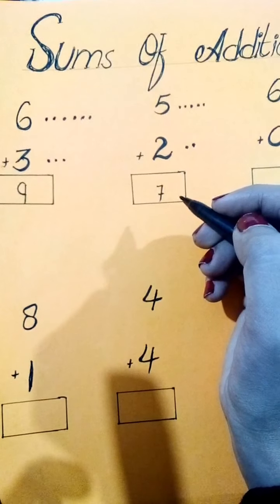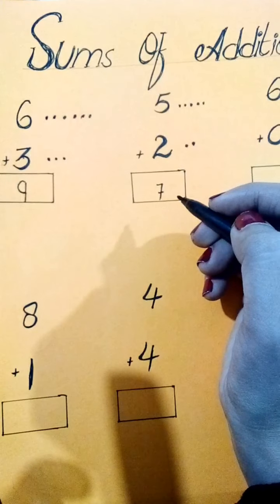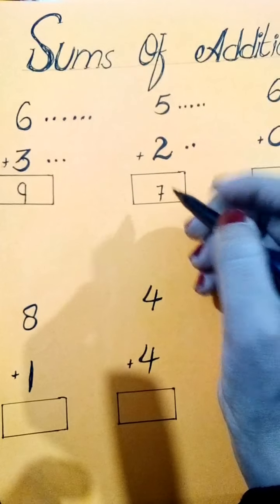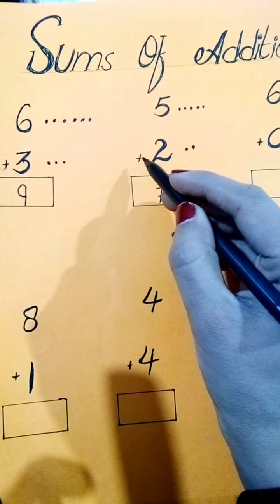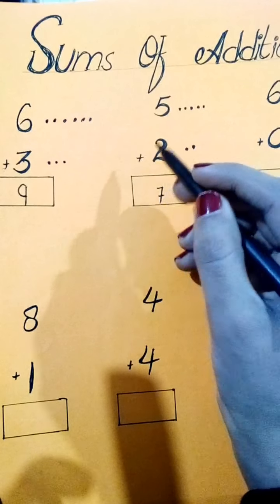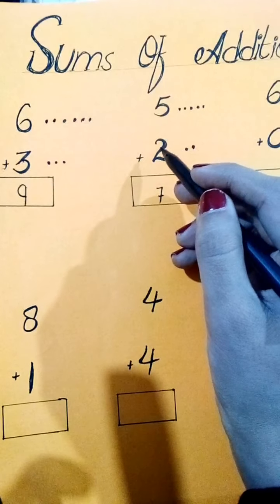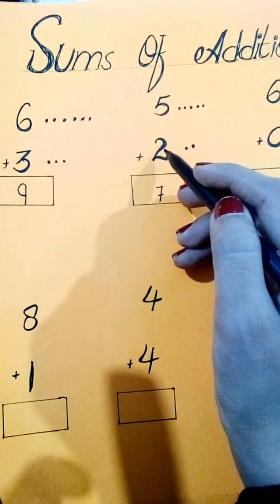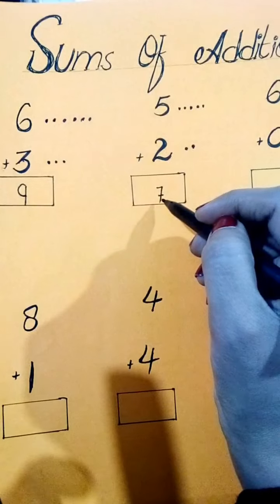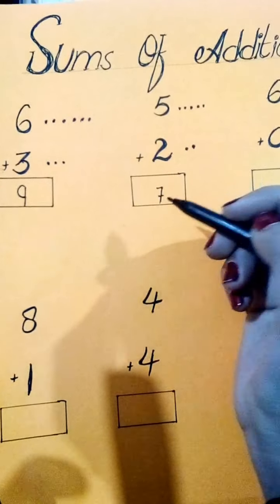यह होता है plus करना, यह होता है addition। Addition का मतलब होता है आपने दोनों numbers को count करना है और जो उनका answer है वो आपने इस box में लिखना होता है।